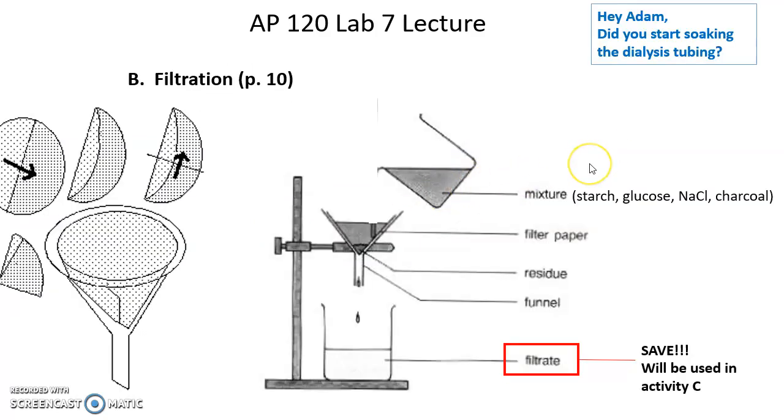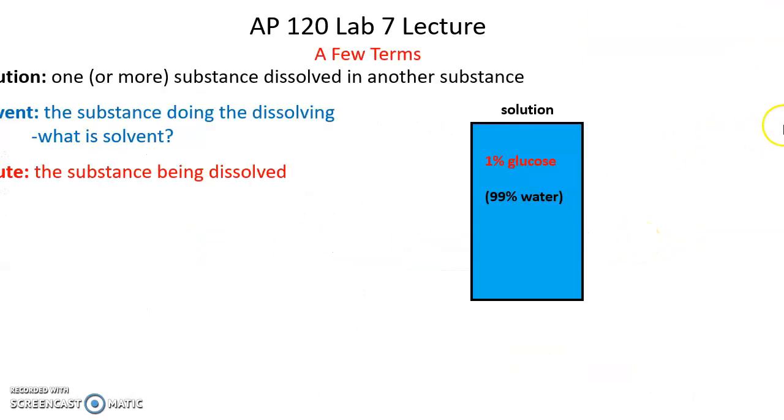This is the setup for the lab's filtration activity. Basically, you have a starch, glucose, sodium chloride, charcoal mixture. You have a filter paper in a funnel. It's poured through. Liquid, or filtrate, will come out, but some stuff will get stuck in the filter paper. Surprise, surprise, it's the charcoal. This charcoal is really big and the tiny holes in the filter paper won't let charcoal pass through.